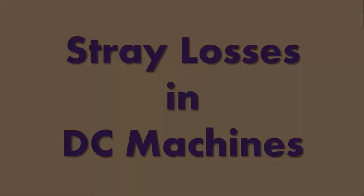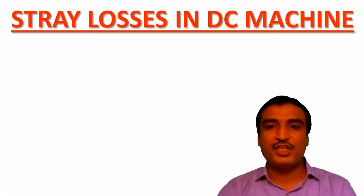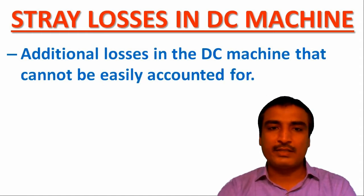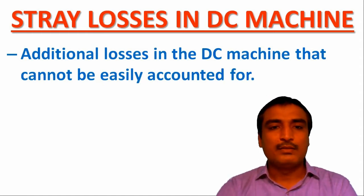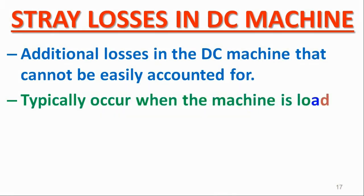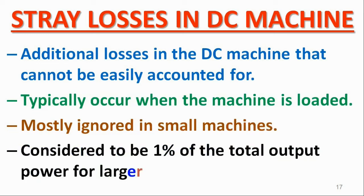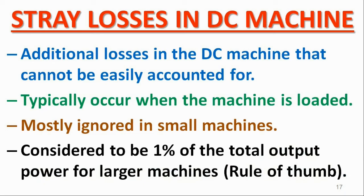Stray losses in DC machines: There are some additional losses in the DC machine that cannot be easily accounted for. Such losses are termed as stray losses. The stray losses typically occur in the machine when it is loaded. In small machines, the stray losses are mostly ignored. However, for large machines, the stray losses are generally considered to be 1% of the output power in total.